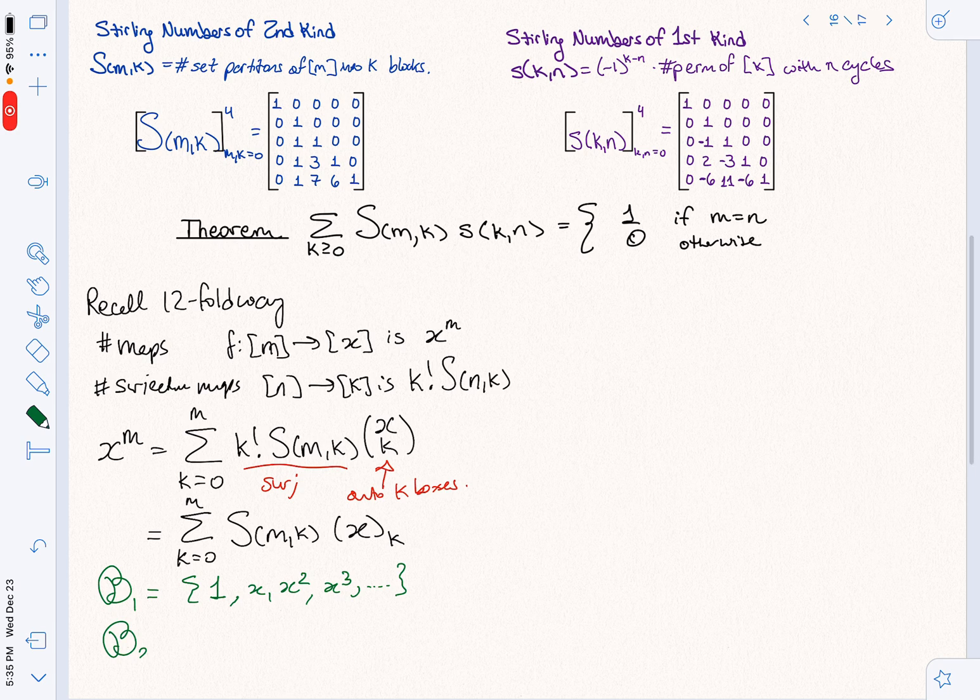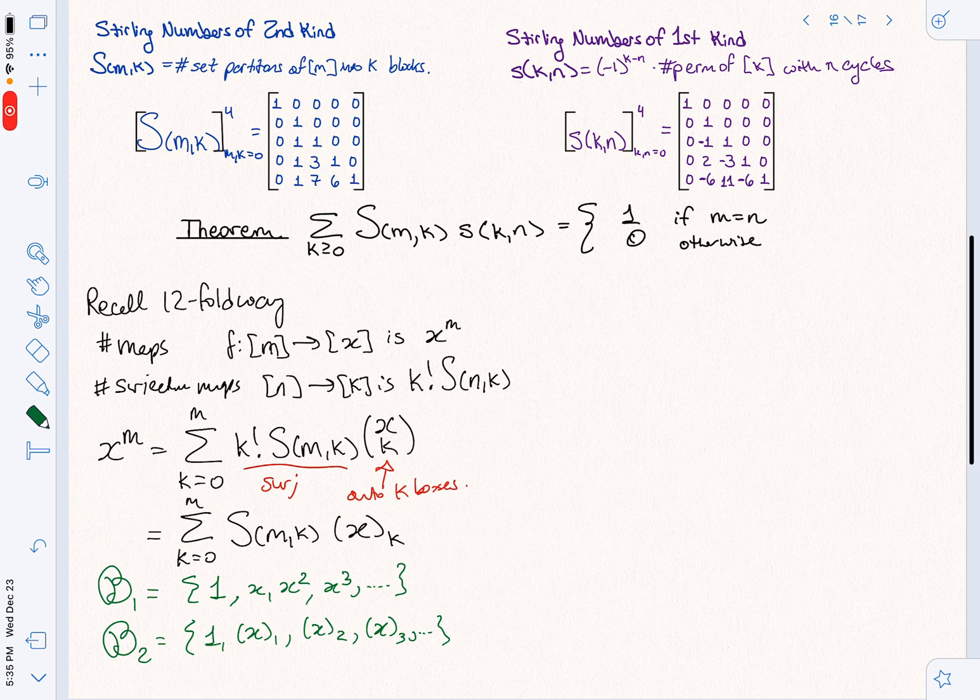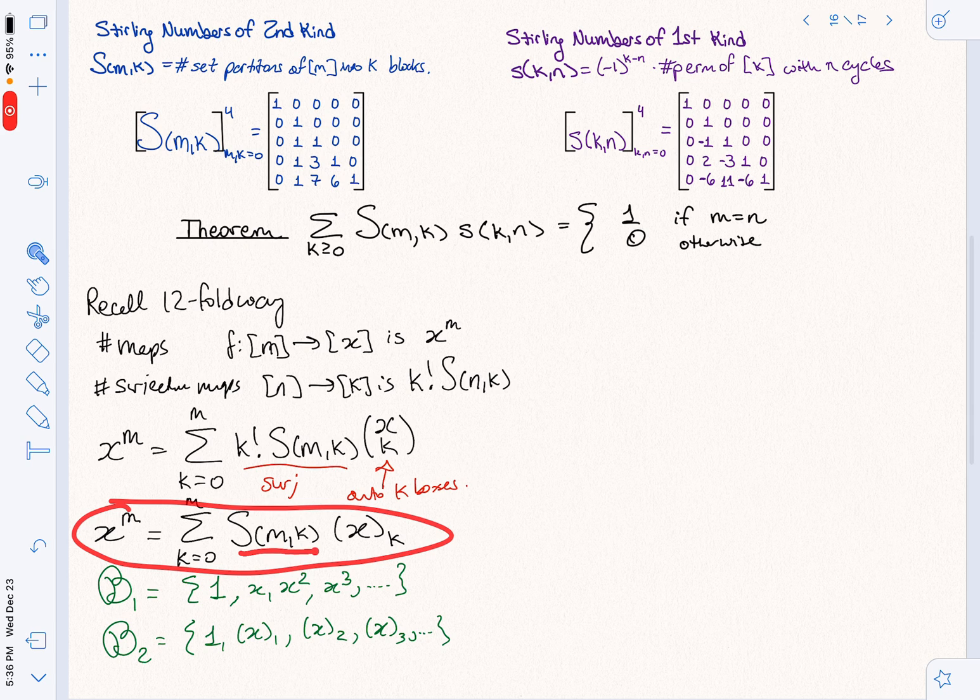There's another basis I could use too. This basis is 1, it's X falling factorial 1, X falling factorial 2, X falling factorial 3, and so on. Why? Because each of these guys is still degree I. So X falling factorial 3 is degree 3. So that's also going to give me a basis for polynomials. And what this statement is actually telling me is that the Stirling numbers of the second kind are the change of basis matrix to go from basis 2 to basis 1.